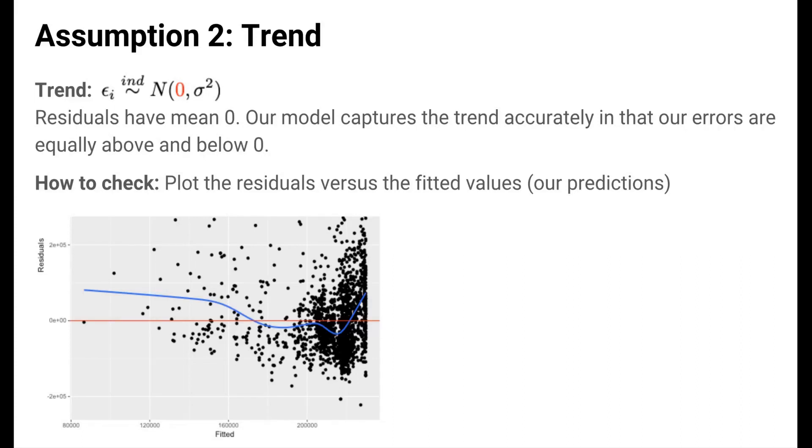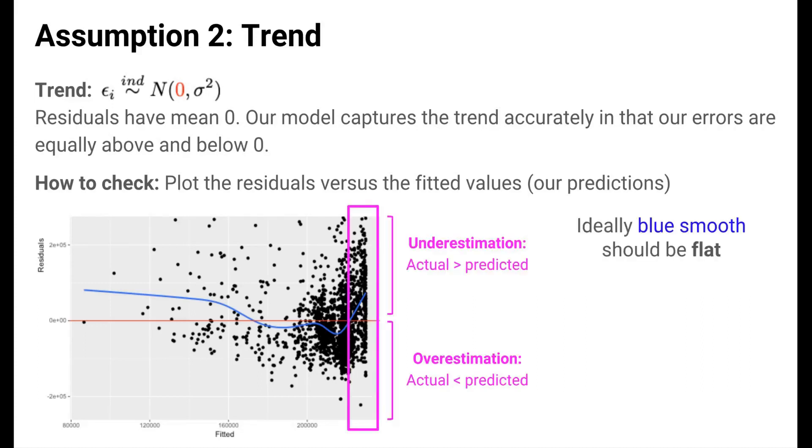The spirit of this assumption is that there should be no lingering trends in our residuals. We can check this by plotting the residuals versus the fitted values, which are our predictions from the model. We do this for our housing model, and we see from this plot that when our predictions are high, the right side, the residuals become increasingly positive. That is, we're increasingly underestimating for these types of houses. The actual prices are higher than what we predict.